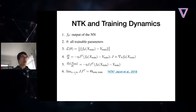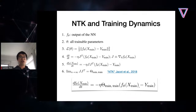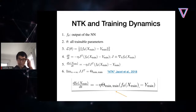Writing gradient descent dynamics in function space and applying the chain rule: df(θ; x_train)/dt = −η · J·J^T · (f(θ) − y_train). As the network width goes to infinity, J·J^T converges to a deterministic kernel called the Neural Tangent Kernel (NTK), first introduced by Jacot in 2018. During training it remains frozen, so the gradient descent dynamic becomes a constant-coefficient ODE with a closed-form solution.